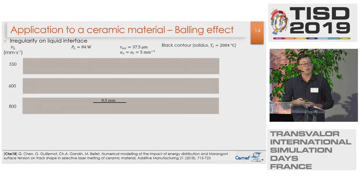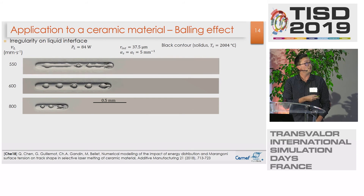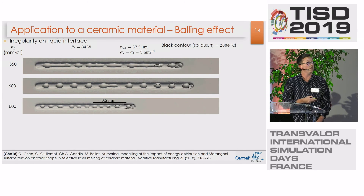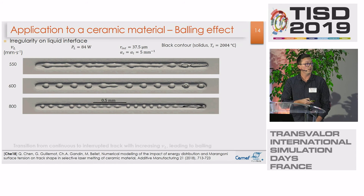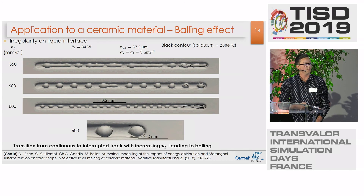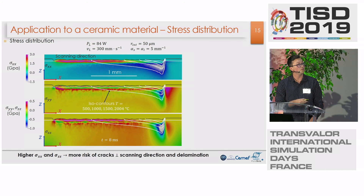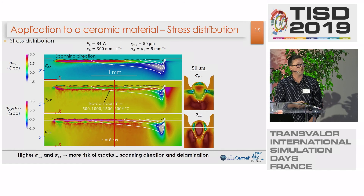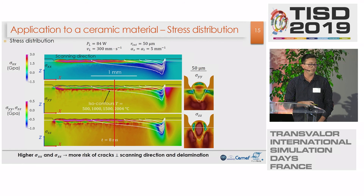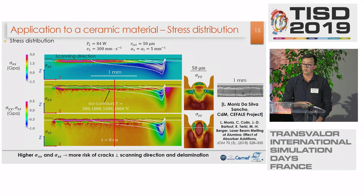Now I will talk about some applications to a ceramic material, to show that we are able to take into account what we call the balling effect — that is to say, if we increase the scan velocity and keep the laser power constant, we are able to predict the transition from continuous to interrupted tracks by increasing the velocity speed, as you can see there, which is something that can also be observed experimentally. Then, if we look at the distribution of stresses, we are able to see on the cross section the high values of Sigma XX and Sigma ZZ that are responsible for the risk of cracks perpendicular to the scanning direction, and this has been observed experimentally in work with Liliana Da Silva-Sancho at Sunday Materials.